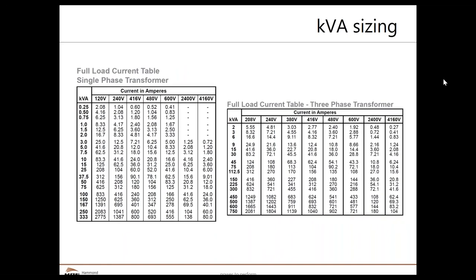This is a quick guide — a full load current table. On the left side you see the single-phase table, and on the right side the three-phase table. This table uses the mathematical formula from the previous slide. You can keep this guide handy for quick reference. It has common kVAs and voltages with their corresponding amperes. For example, a single-phase 240-volt 100 kVA transformer has a full load current of 416 amperes. Similarly, for a three-phase 480-volt 75 kVA transformer, the full load current is 90.2 amperes.